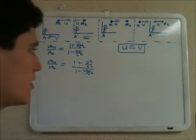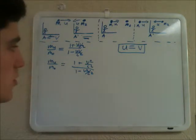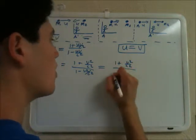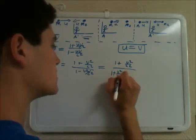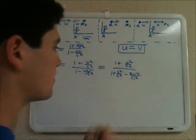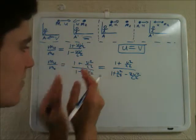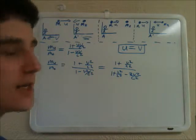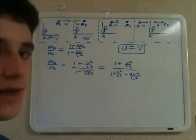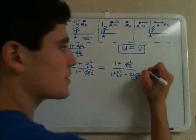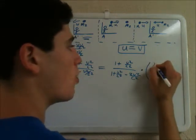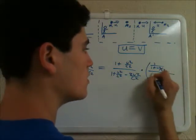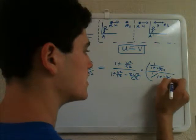Now I'm just going to rewrite this using some mathematical maneuvers to get to a certain result, as 1 plus v squared over c squared over 1 plus v squared over c squared minus 2v squared over c squared. This is because this quantity is negative 1 times v squared over c squared, and this quantity is 1 times v squared over c squared minus 2v squared over c squared, which is the same as negative v squared over c squared. Now I'm going to multiply by 1 in the form of 1 over 1 plus v squared over c squared, over 1 over 1 plus v squared over c squared.